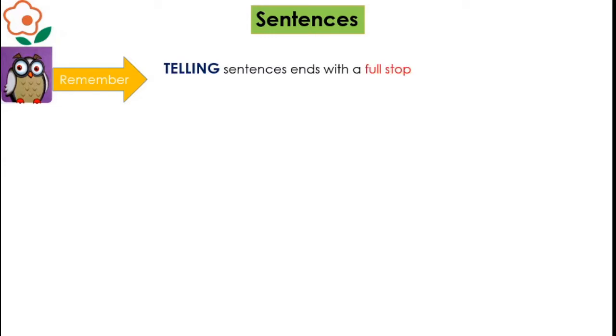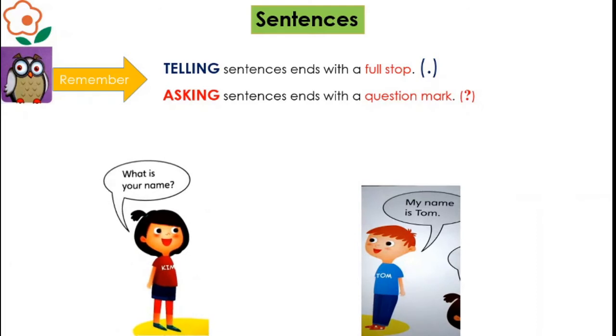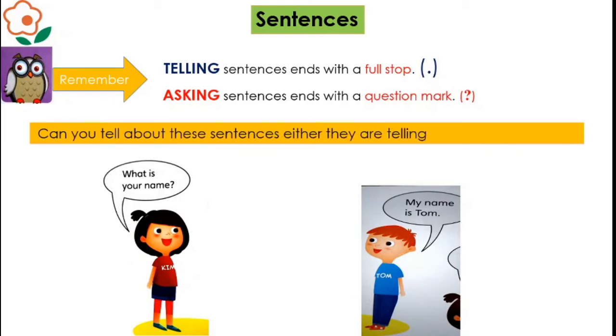Let's try an example where two friends meet together. The girl, Kim, asks a question to the boy, Tom. Kim asks, what is your name? Can you tell what this is? Is it a telling sentence or asking sentence? It is an asking sentence because it has a question mark.